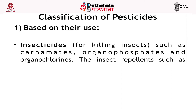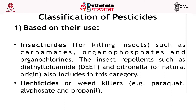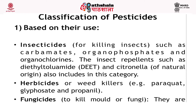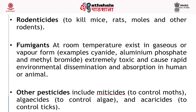Then herbicides, they are particularly used for weed control and examples are glyphosate and propylene. Fungicides, they are used to kill molds or fungi, they are also called wood preservatives. Rodenticides, then fumigants and other pesticides including miticides, algicides and acaricides which are used to control ticks are being used.